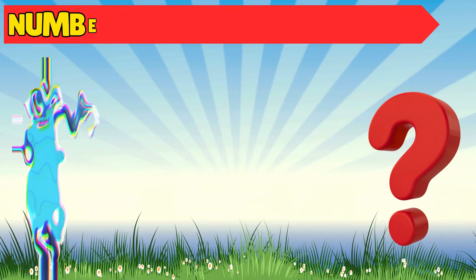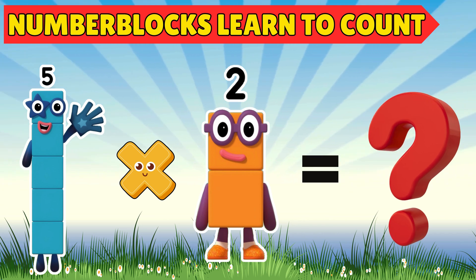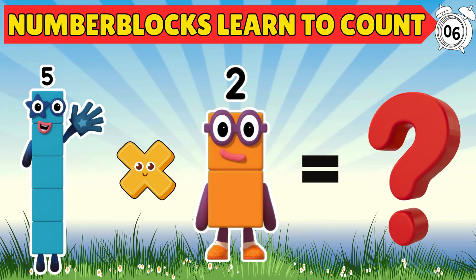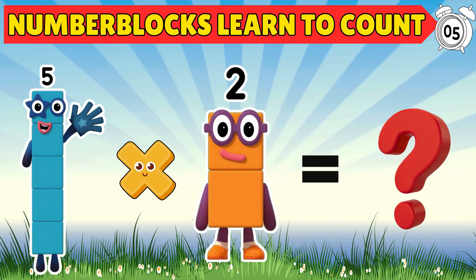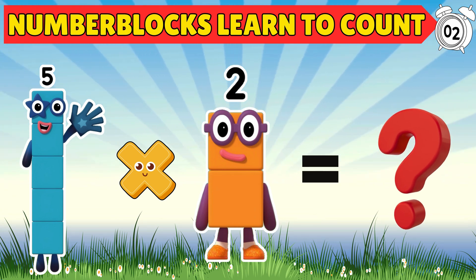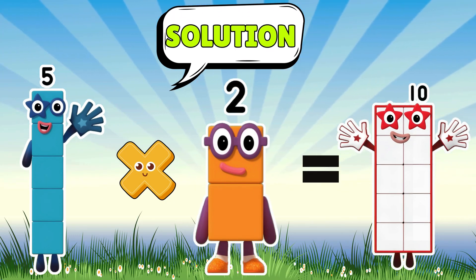Number Blocks multiplication time. Five into two equals — guess the answer. You are correct! Five into two equals ten. That's the solution.